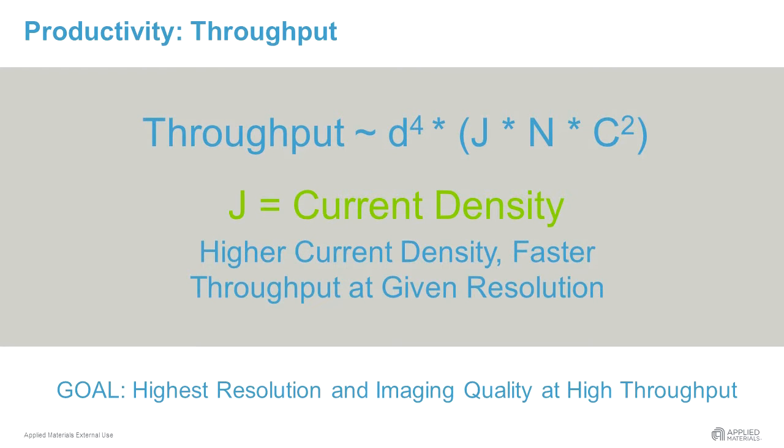The most important one is current density. Current density is the number of electrons per electron spot area. The higher the current density, the faster is the throughput at a given resolution.